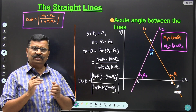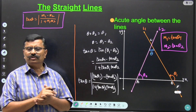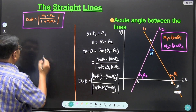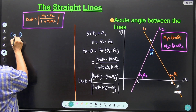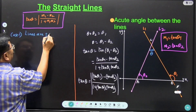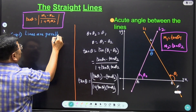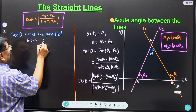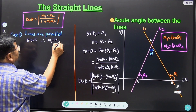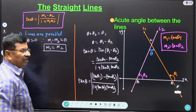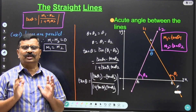Now, what is the angle between two parallel lines? That is 0. So what is the relation among the slopes of two parallel lines? When lines are parallel, theta is 0, therefore M1 minus M2 is equal to 0, hence M1 is equal to M2. So when two lines are parallel, their slopes are the same.